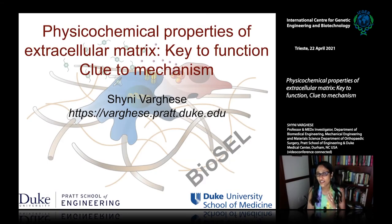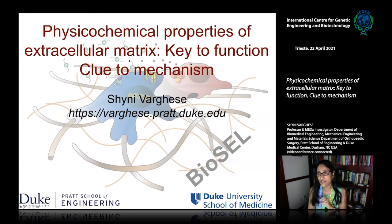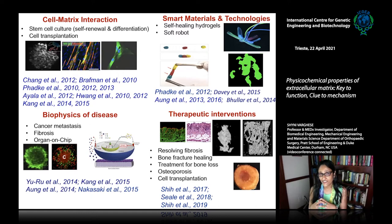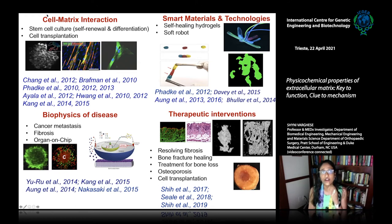Today I'm going to discuss a few examples where we use physical and chemical properties of the extracellular matrix to study the molecular mechanism and to identify new therapeutic targets. Our lab has a few different research interests. One is creating biomaterials to understand cell-material interaction, mostly focusing on self-renewal of stem cells or differentiation of stem cells. And in recent days, we also started getting involved with cell transplantation.